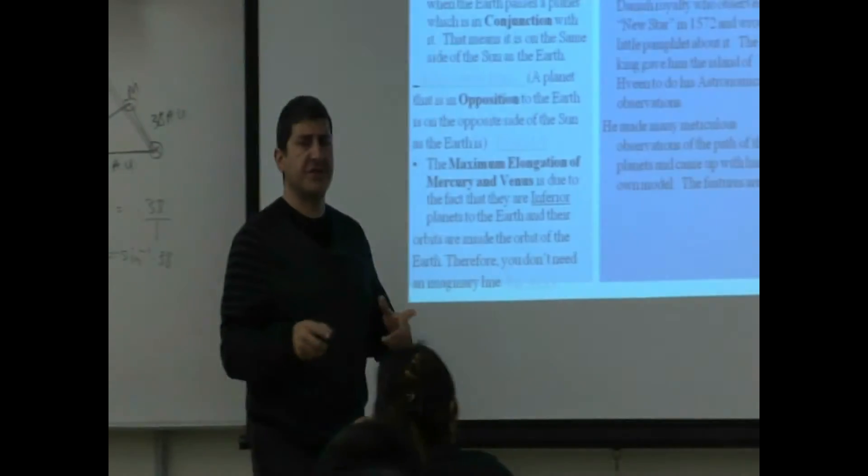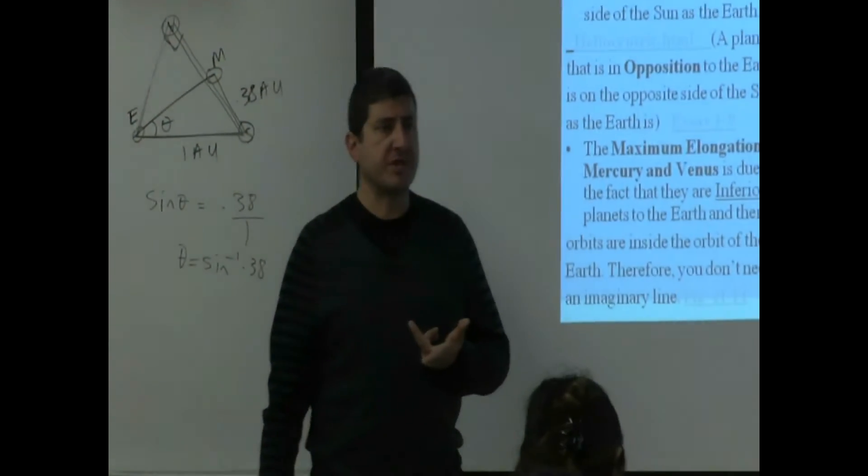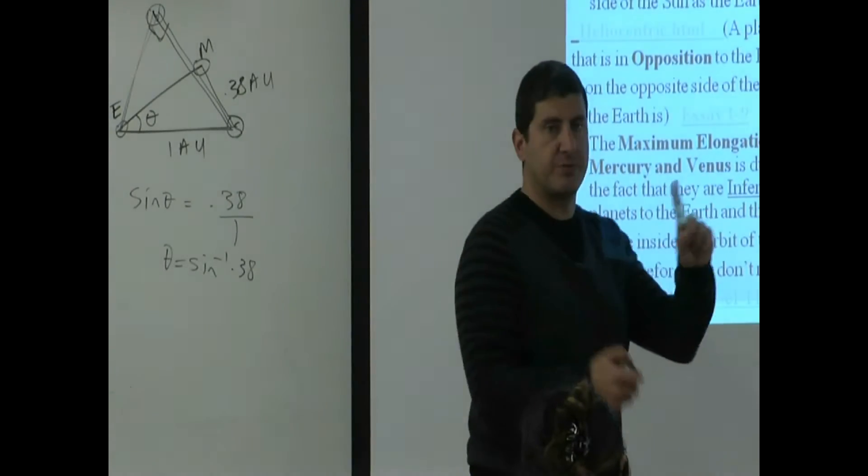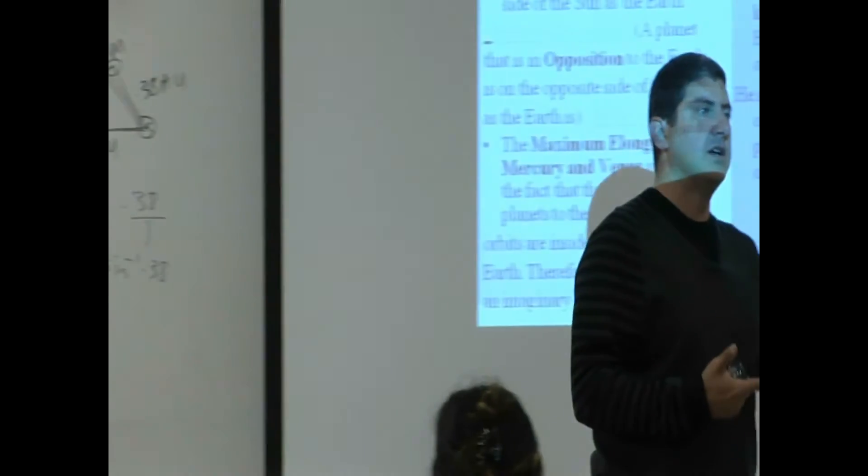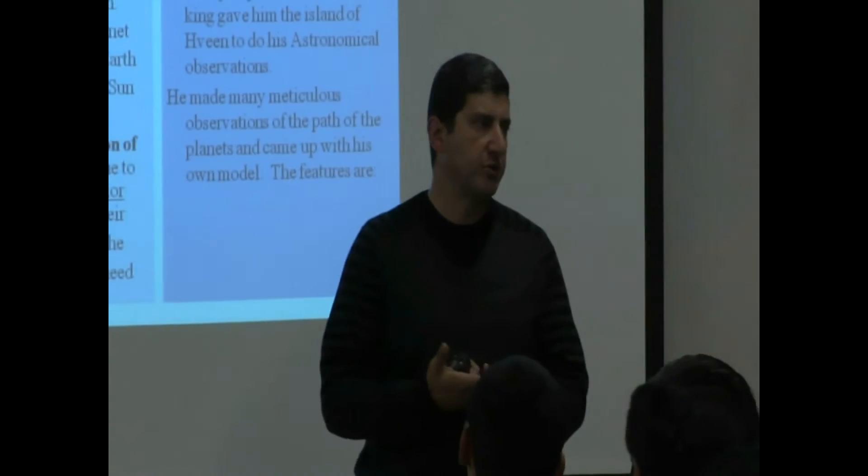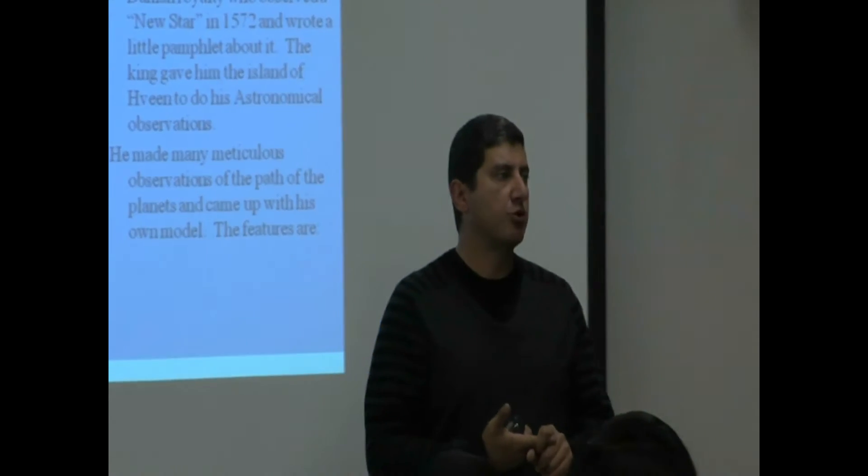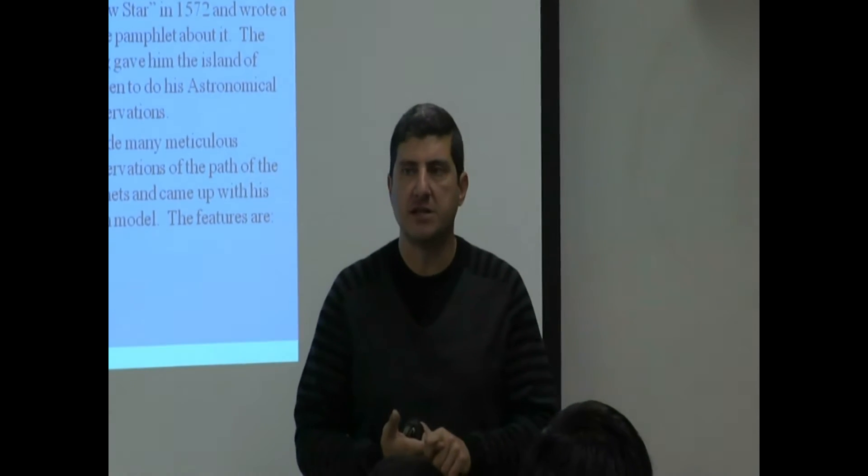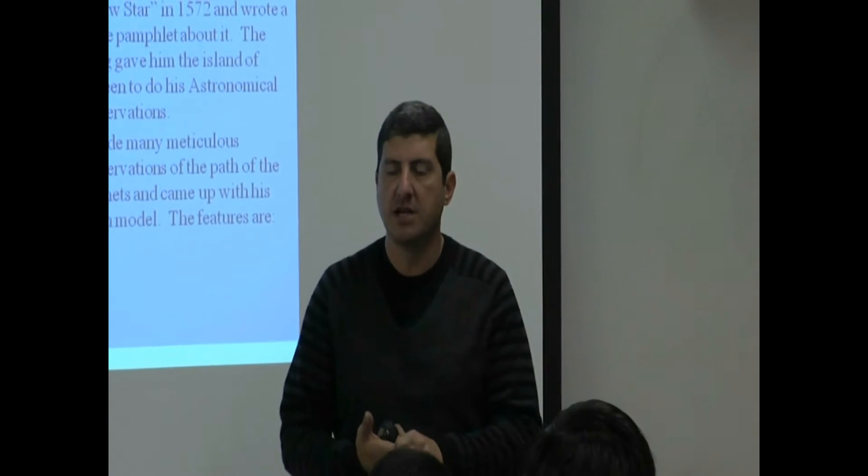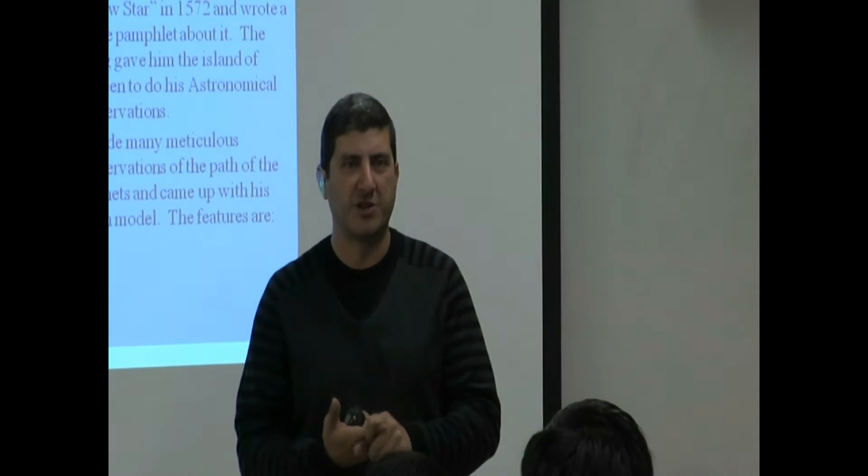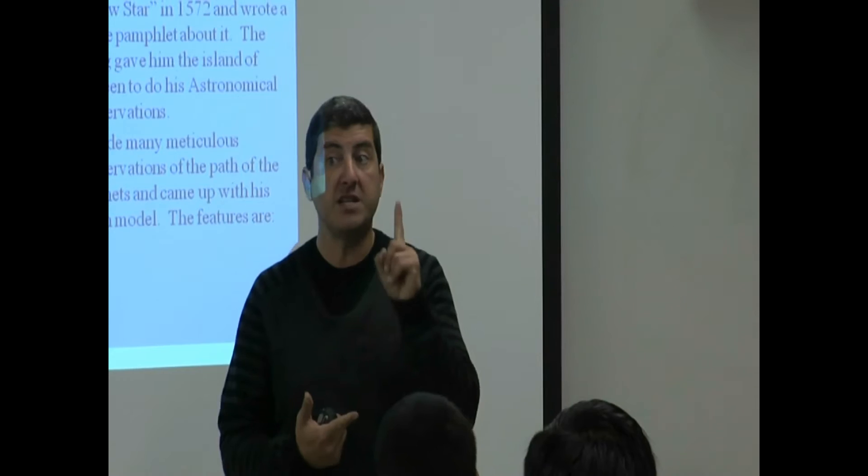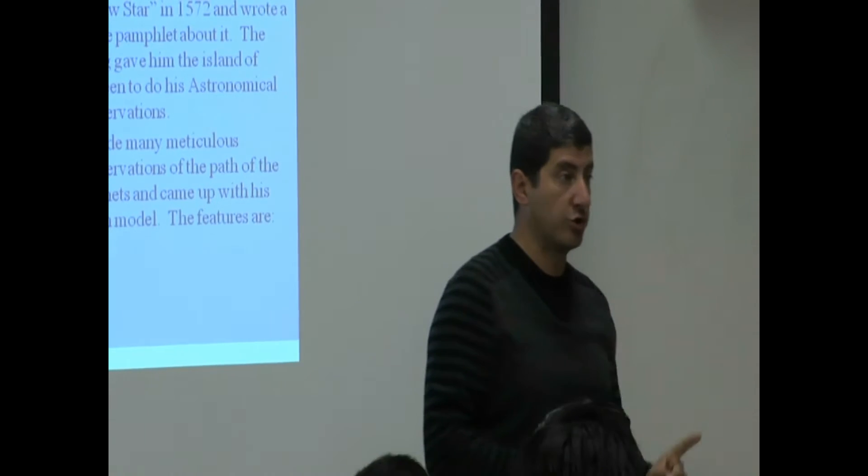So one of the motivations for astronomers back then, besides trying to explain why planets retrograde and why Venus and Mercury were close to the sun, they were also trying to come up with a model that best can predict the positions of planets from month to month. The predictability power of a model is very important to that model.